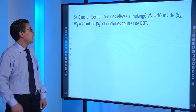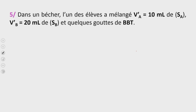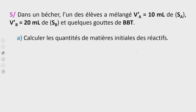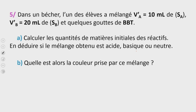Cinquième question : dans un bécher, l'un des élèves a mélangé V'A = 10 mL de la solution SA avec V'B = 20 mL de la solution SB et quelques gouttes de BBT. Question a : calculer les quantités de matière initiales des réactifs et en déduire si le mélange obtenu est acide, basique ou neutre. Question b : quelle est alors la couleur prise par ce mélange ?